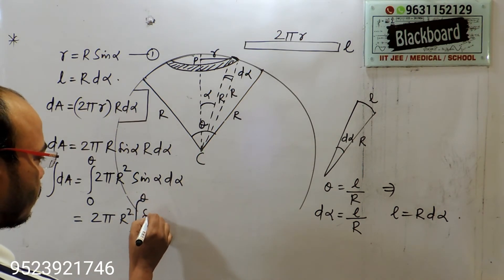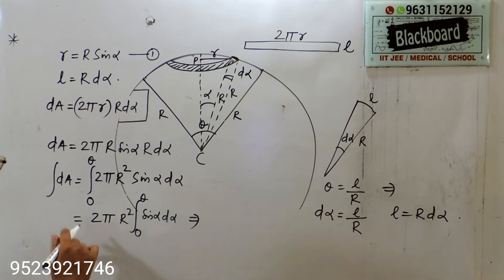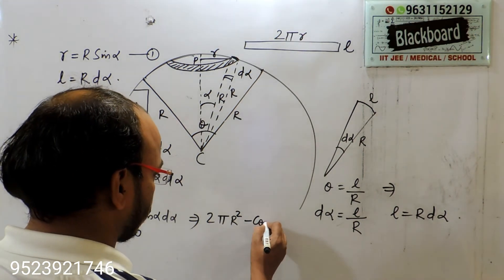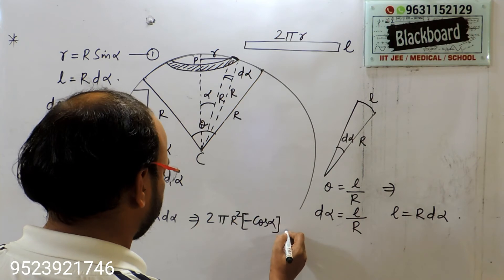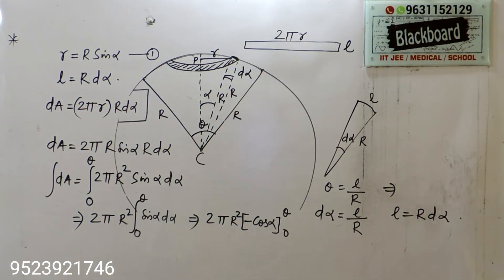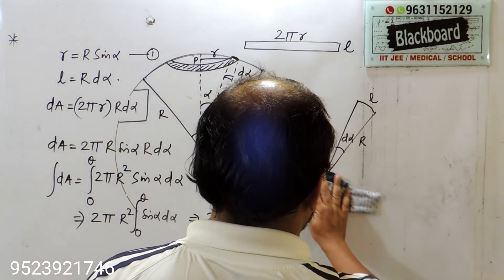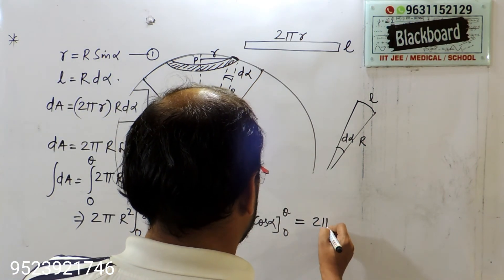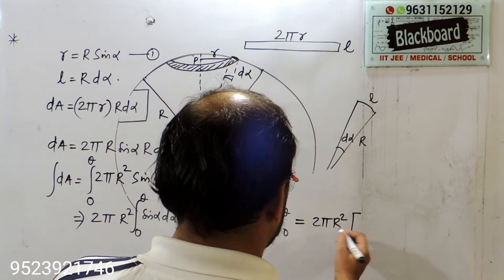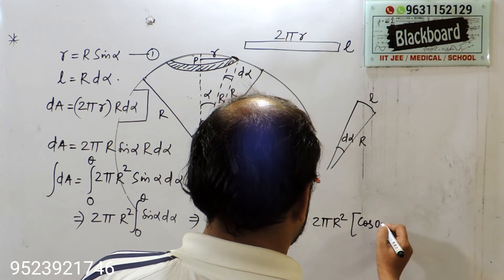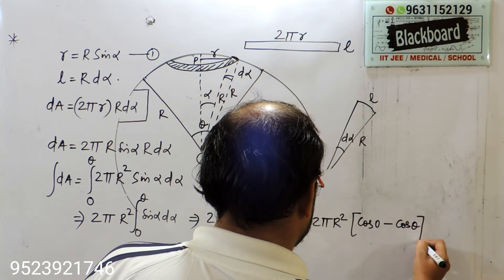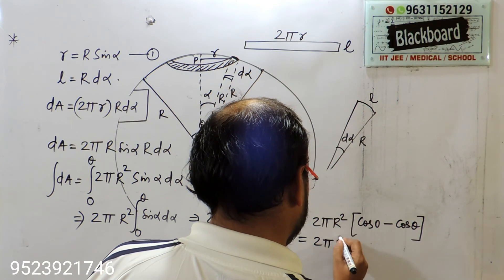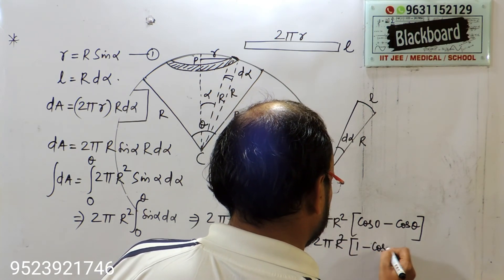So we have 2πR² times the integral from 0 to theta of sin(alpha) d(alpha). The integration of sin(alpha) is −cos(alpha). Putting in the limits 0 to theta, and removing the minus sign by changing the limit order, we get 2πR² × (cos 0 − cos θ), which gives 2πR²(1 − cos θ).